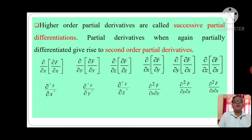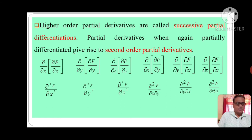See: del by del x of del f by del x; del by del y of del f by del y; del by del z of del f by del z. Again, del by del x of del f by del y; del by del y of del f by del x; del by del z of del f by del x. Now, del by del x of del f by del x means we are differentiating del f by del x with respect to x — it is partially differentiated — and is given by del²f by del x². Del by del y of del f by del y is given by del²f by del y². Del by del z of del f by del z is given by del²f by del z². Del by del x of del f by del y is given by del²f by del x del y. Del by del y of del f by del x is given by del²f by del y del x, and del by del z of del f by del x is given by del²f by del z del x.